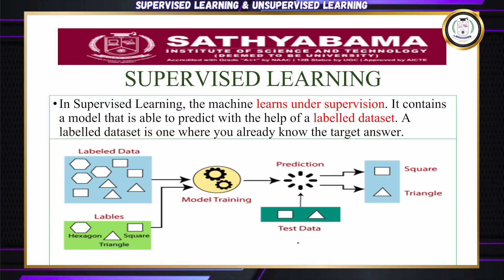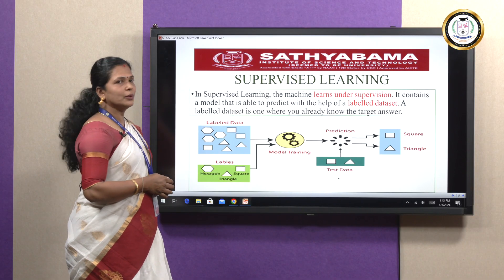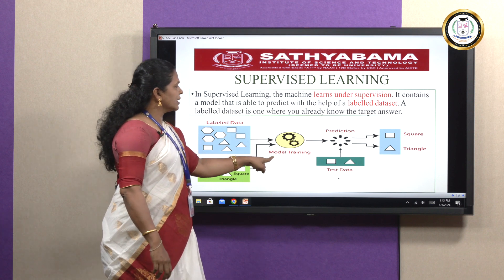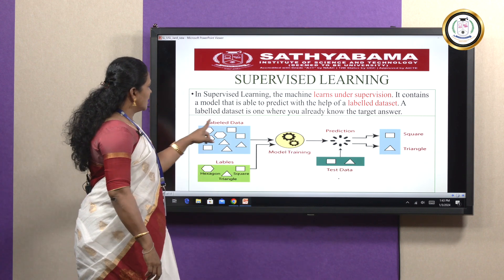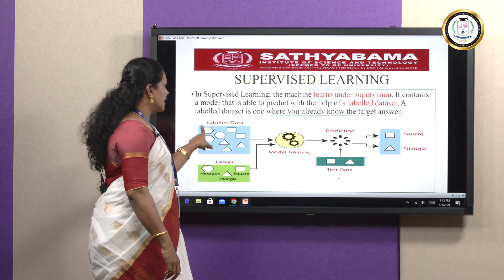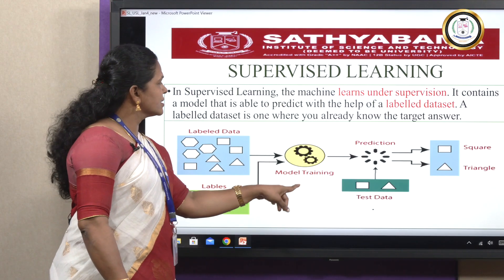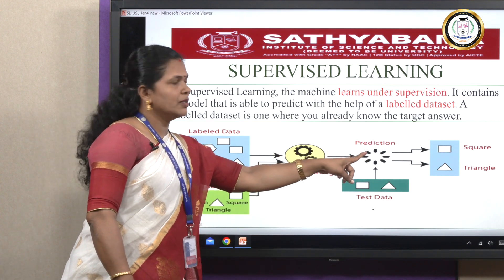In supervised learning, the machine learns under supervision. It contains a model that is able to predict with the help of a labeled data set. A labeled data set is one where you already know the target answer. First, models are trained using labeled data. Once the training process is completed, the model is tested using test data. Finally, we get the output.